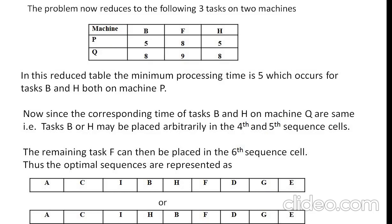Now the problem is reduced to three tasks and two machines. The minimum processing time is 5, which occurs for both tasks B and H on machine P. So B and H are arranged in the forward direction. The remaining task F is placed in the next sequencing cell. We now have the optimal sequence. There are two possibilities, and these are the new optimal sequences.